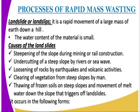It can also take place when we have the loosening of rocks by earthquakes and volcanic activities. So when that rock becomes weak, the earthquake and the volcanic activities take place. Number four, there is the clearing of vegetation from steep slopes by man. Number five, we have the thawing of frozen soils on steep slopes and the movement of melt water down the slope that triggers off the landslides.